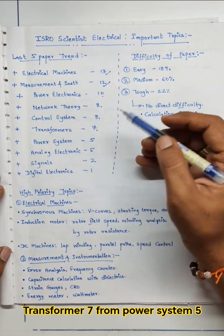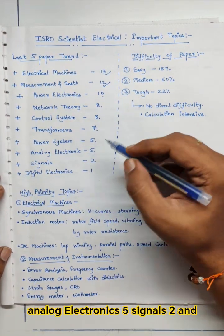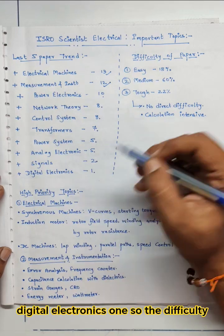Control system 8, from transformer 7, from power system 5, analog electronics 5, signals 2, and digital electronics 1.